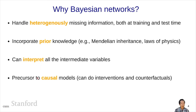Finally, Bayesian networks are an important precursor to causal models. These are beyond the scope of this course, but they are extremely important, especially these days. They allow you to answer questions about interventions—for example, what would happen if we give this drug to this patient—and counterfactuals, such as what would have happened if we had given this drug. These questions are extremely deep, and standard machine learning methods that view the world only through the lens of predictions are really inadequate to answer them.